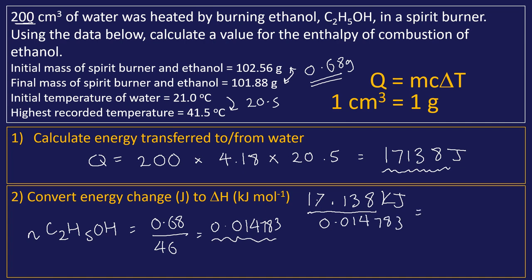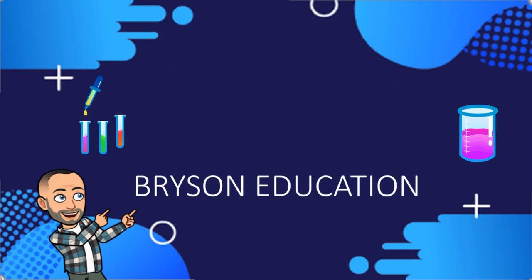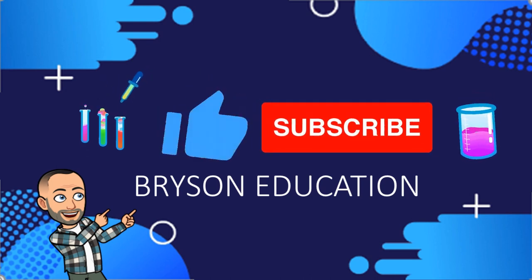Dividing kilojoules by moles: 17.138 ÷ 0.014783 = 1159.3 kJ/mol. Not quite finished — we need the sign for the enthalpy change. The temperature of the water increased, which means enthalpy decreased: it's an exothermic reaction, so we put a negative sign. The final answer is −1159.3 kJ/mol. That's the end of this video — thanks for watching, and good luck.